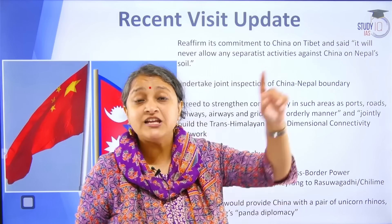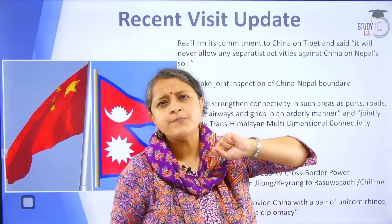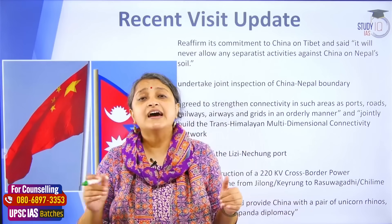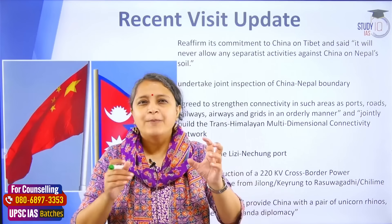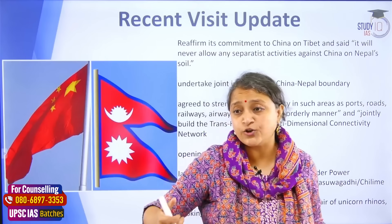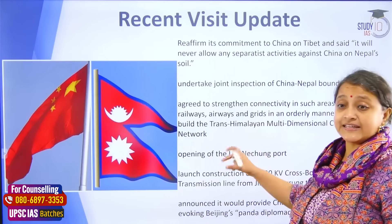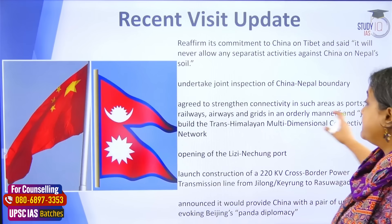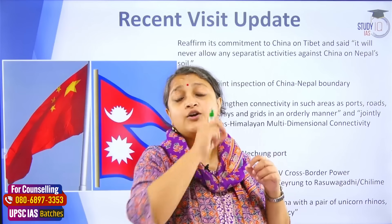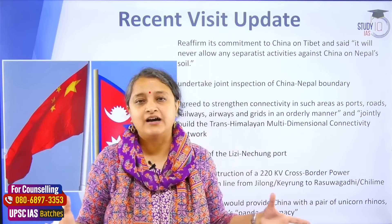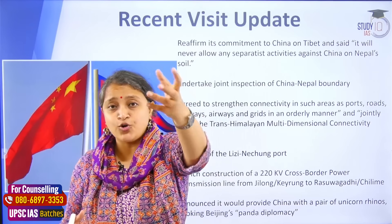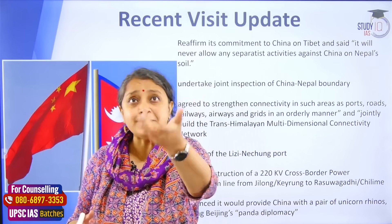One outcome was that Nepal agreed to support China's policy on Tibet — that Nepal will not allow any separatist activity against China. The second thing discussed was boundary disagreements, especially after China released a new map in September. On this too, no important agreement was reached — they only said that a joint inspection of the China-Nepal border boundary line will happen, but no actual resolution of disputes was discussed. Third, it was agreed that connectivity will be strengthened through a Trans-Himalayan Multi-Dimensional Connectivity Network, with railways, airways, and grids to be developed and roadways to be mapped.